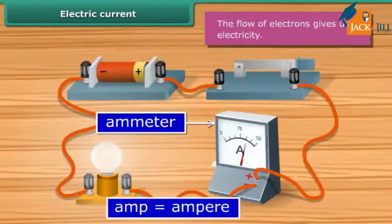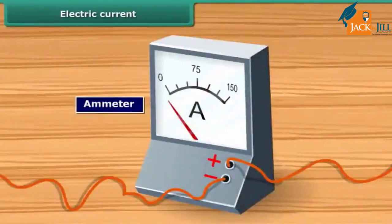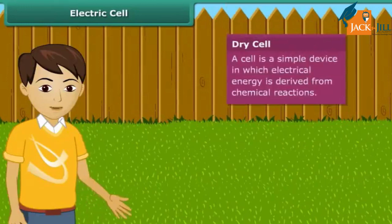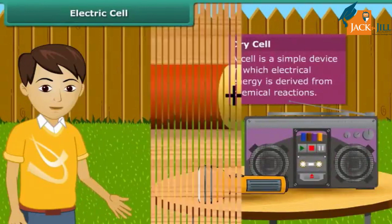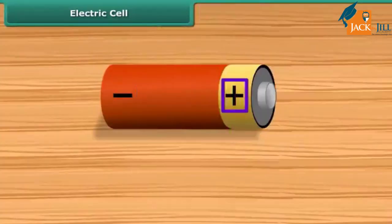Electric current is measured by ammeter. A dry cell battery used in a torch or transistor radio is a source of electric current. Every battery has two terminals marked plus and minus.